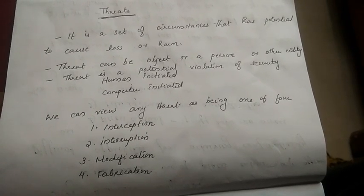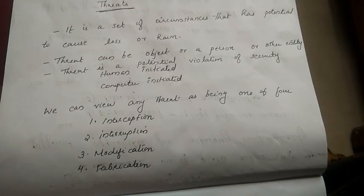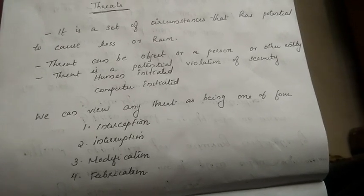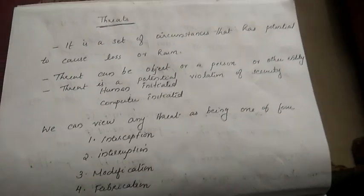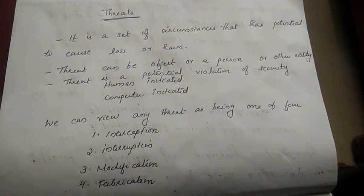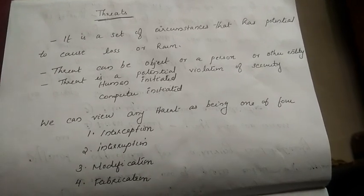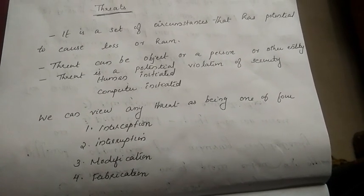Rather, it is a set of conditions — when something becomes harmful or causes data loss, we call that a Threat. A Threat can be an object, a person, or any other entity. A Threat is a potential violation of security — any violation in computer security is what we call a Threat.